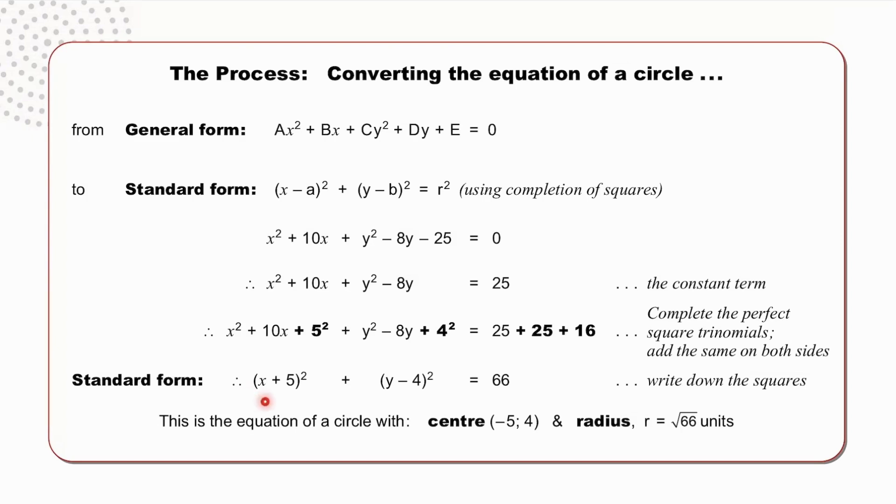We now write down our squares, (x + 5)² and (y - 4)². This is the standard form of the equation of a circle, with centre (-5, 4), and radius squared equal to 66, therefore the radius itself is the square root of 66 units.